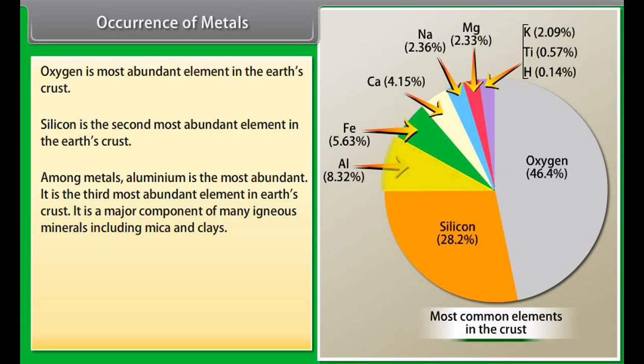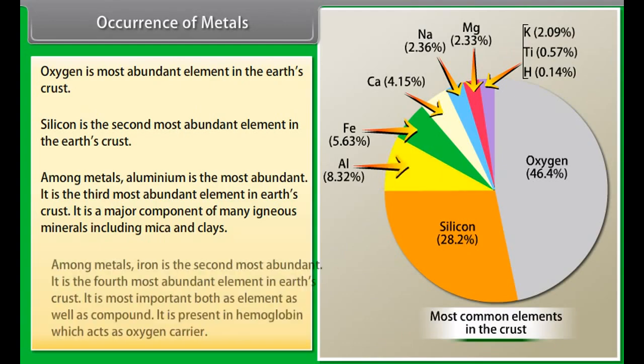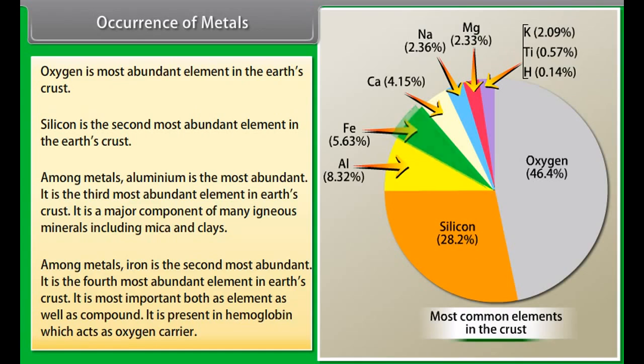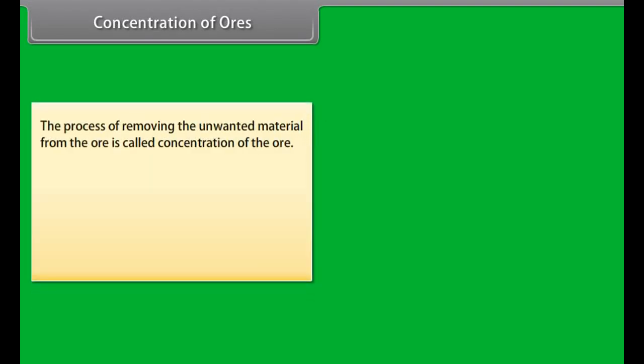It is a major component of many igneous minerals including mica and clay. Many gemstones are impure forms of Al2O3 and the impurities range from chromium to copper. Among metals iron is the second most abundant. It is the fourth most abundant element in earth's crust. It is most important both as element as well as compound. It is present in hemoglobin which acts as oxygen carrier.